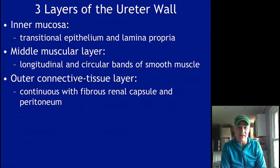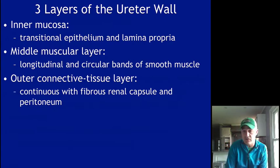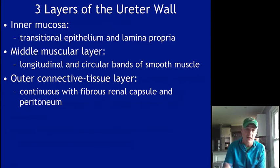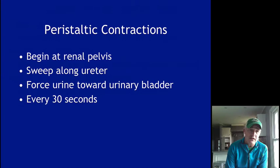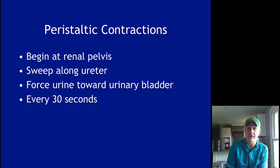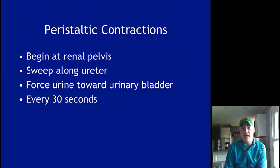The ureter wall has an inner mucosa of transitional epithelium with connective tissue lamina propria underneath, then a muscle layer with circular and longitudinal layers that allows peristalsis to move fluid down to the bladder, and an outer connective tissue adventitia. These peristaltic contractions start at the renal pelvis and work their way down, so even if you were standing on your head, you could fill your bladder. Gravity helps when upright, but peristalsis moves urine regardless — about every 30 seconds.